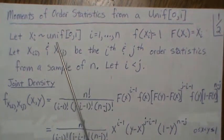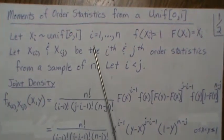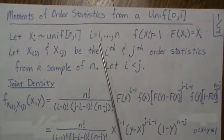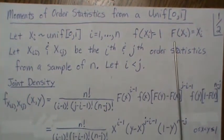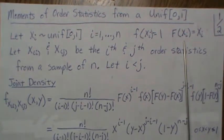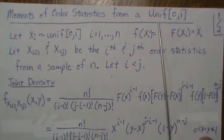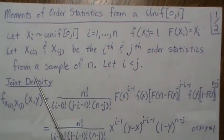So let's let X be uniform 0 1 and we're going to have a sample of size n. It means our density is 1 and the CDF, the cumulative distribution function, is X for this uniform 0 1 random variable.